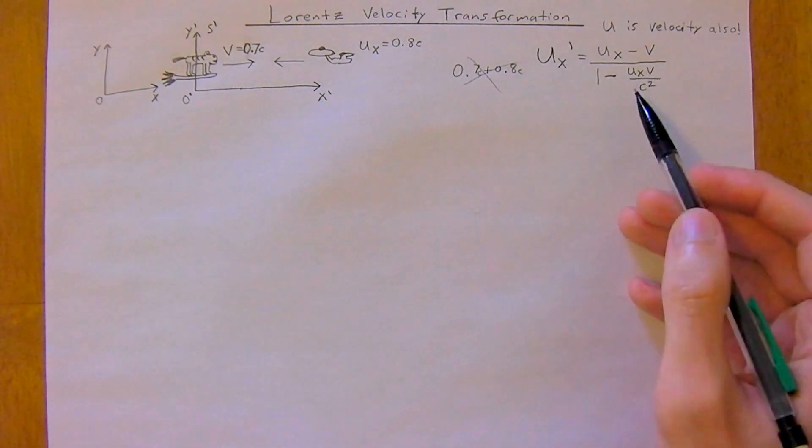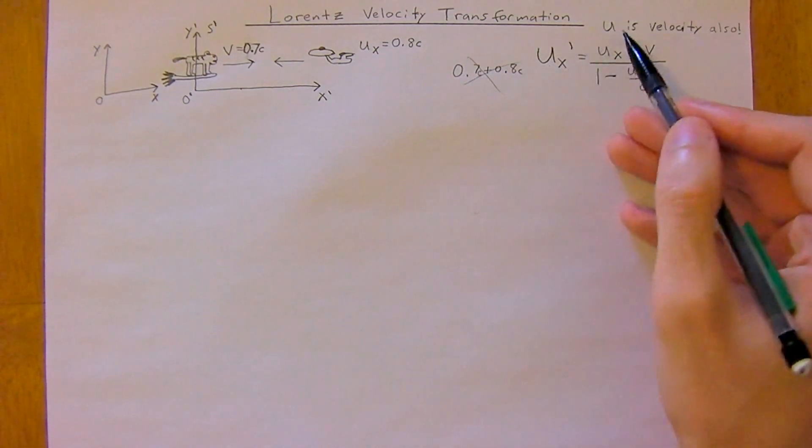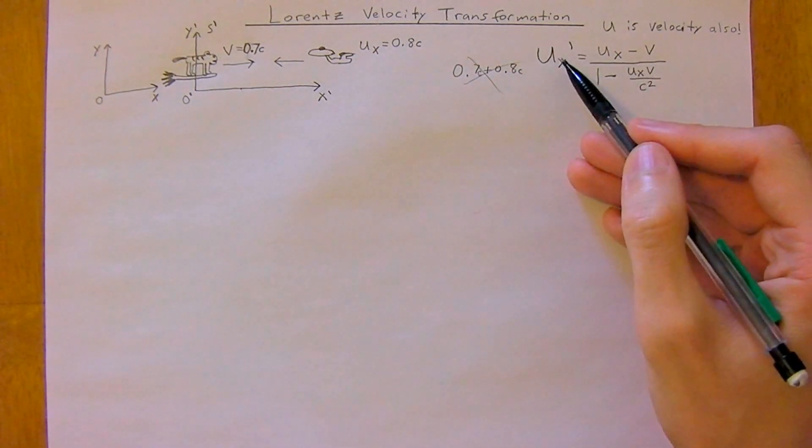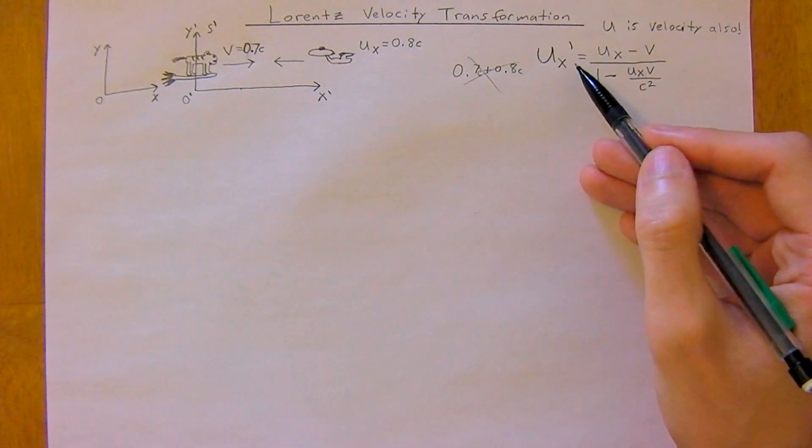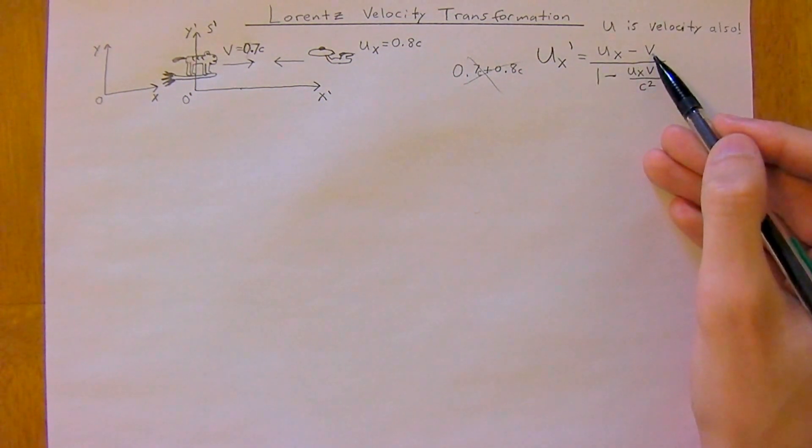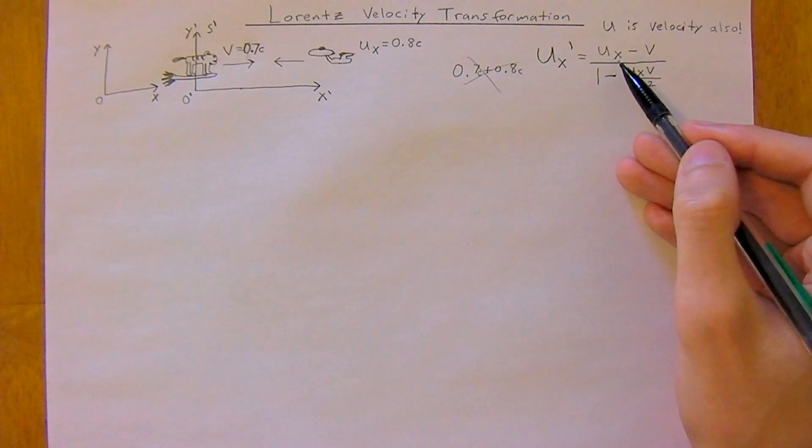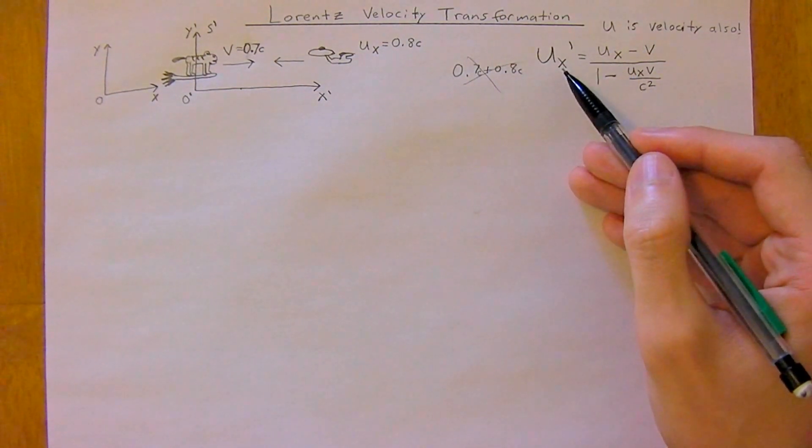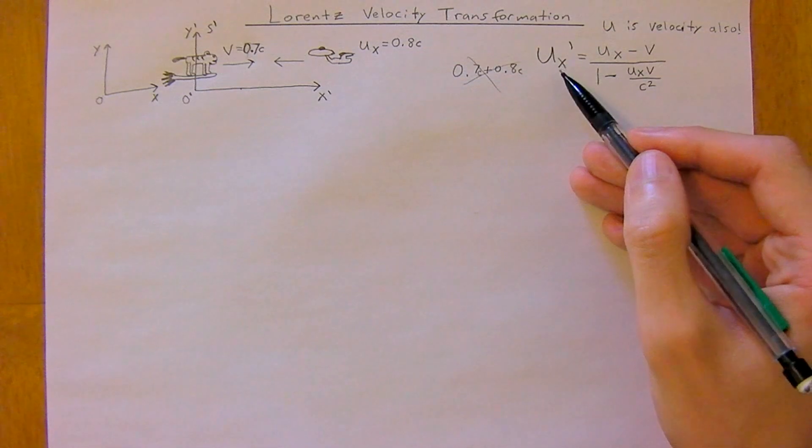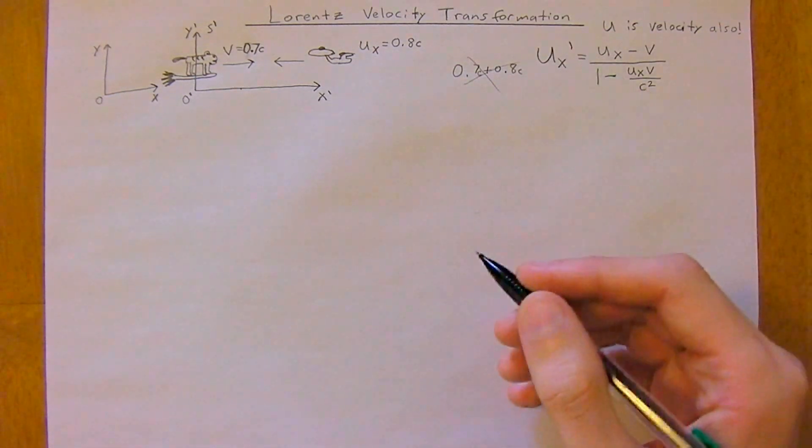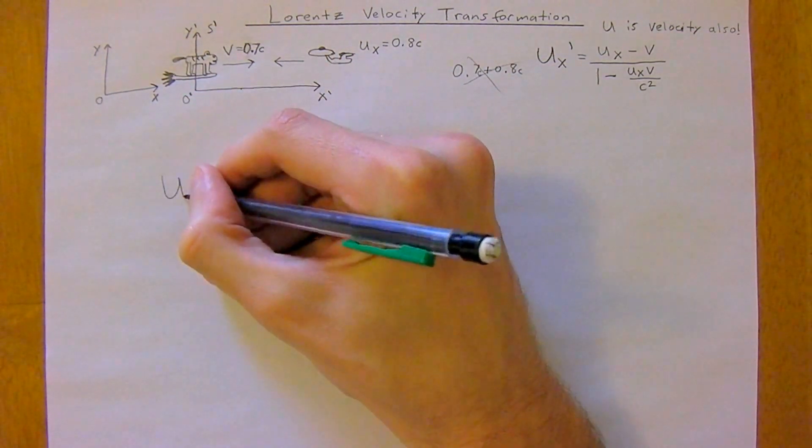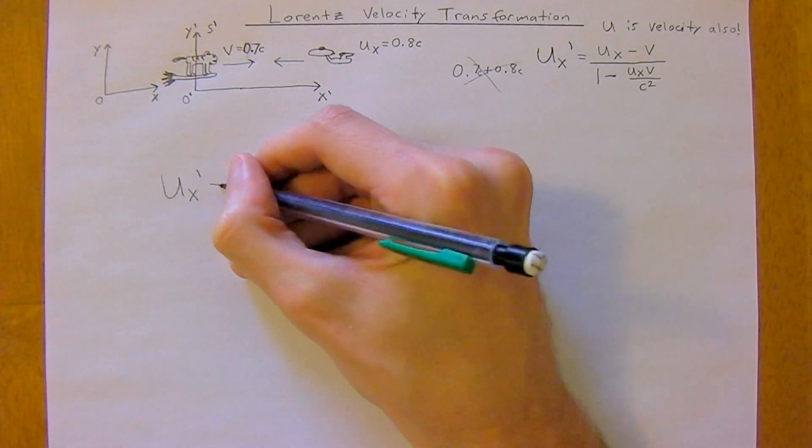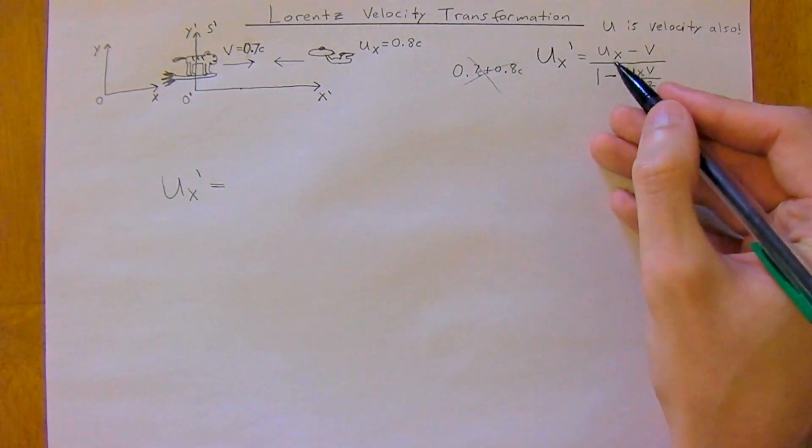Now it's pretty straightforward. We can solve with this equation. U is just velocity, another variable for v, but we have three different velocities now: the velocity of the cat on the broomstick, the velocity of the spaceship, and the velocity that the cat sees of the spaceship approaching it.